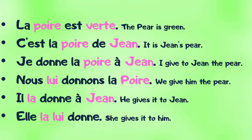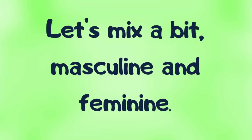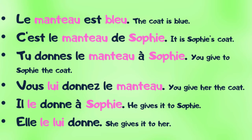It designates the third person regardless of gender. In this classical construction, between the subject and the verb, feminine or masculine singular, we always use lui. For example, let's do a mix. Le manteau est bleu. C'est le manteau de Sophie. Tu donnes le manteau à Sophie. Here, Sophie is a girl. Vous lui donnez le manteau. Il le donne à Sophie. Elle le lui donne.